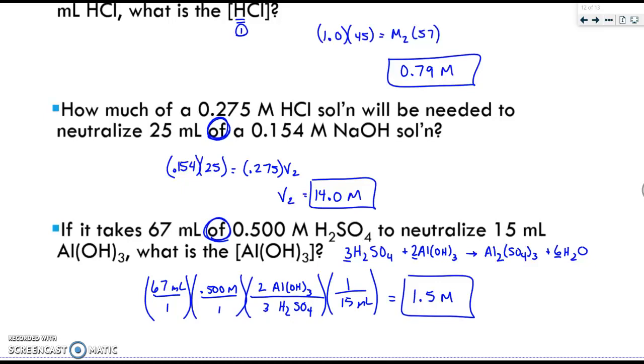For solution stoichiometry, we always take the volume of the given over 1 times the molarity of the given over 1. Then we do our balanced equation step, and then we take 1 over whatever the other number is, and you should end up getting 1.5 molar.